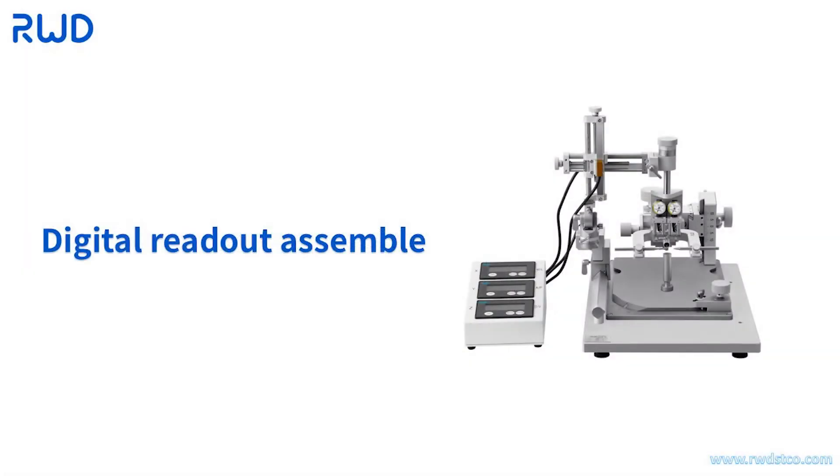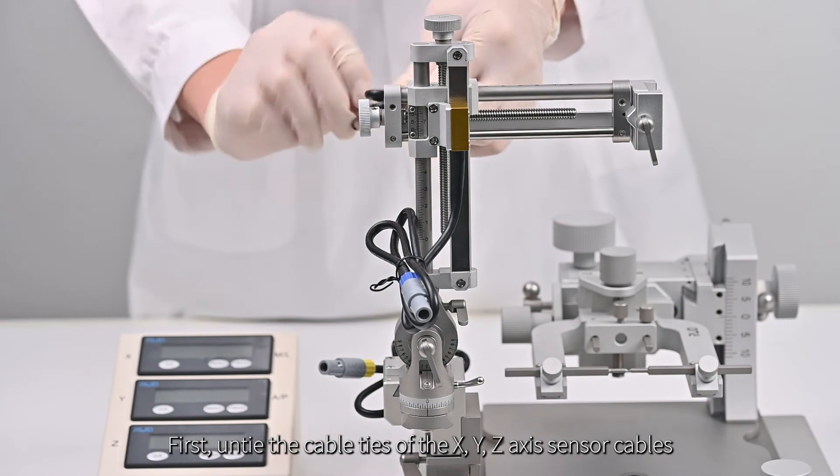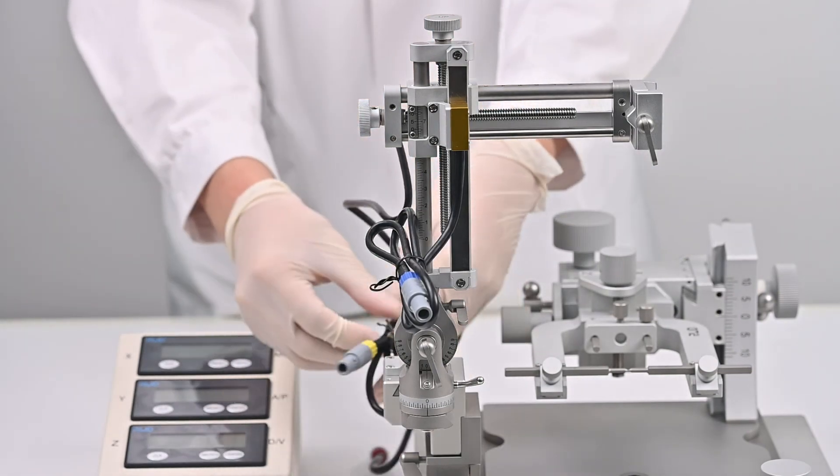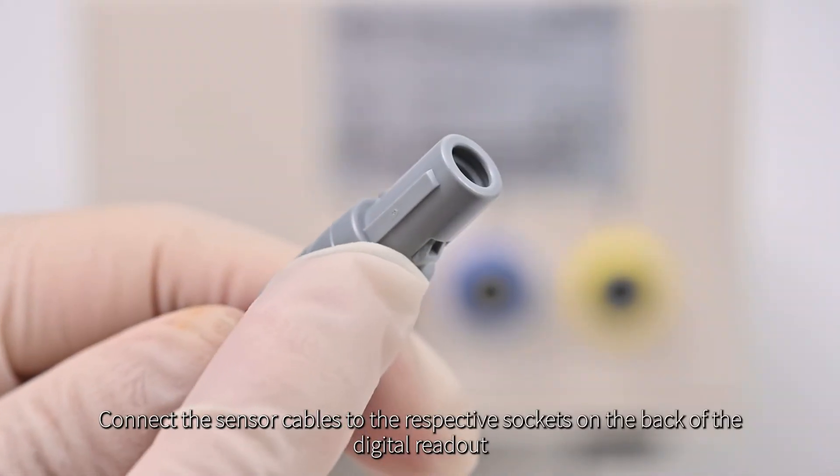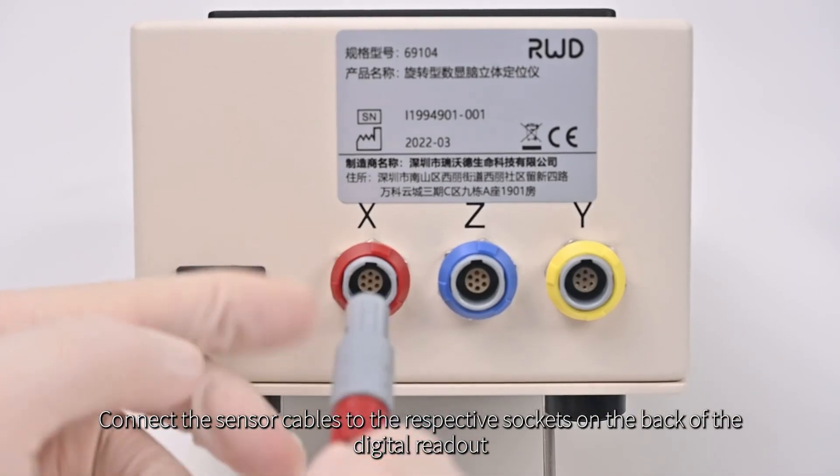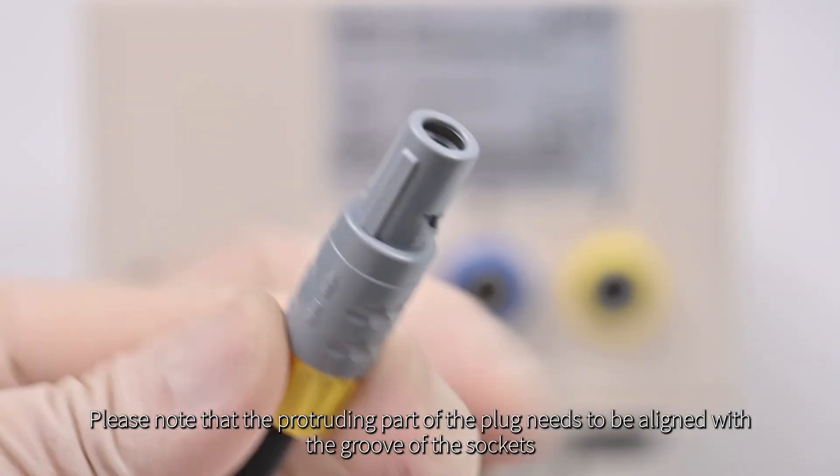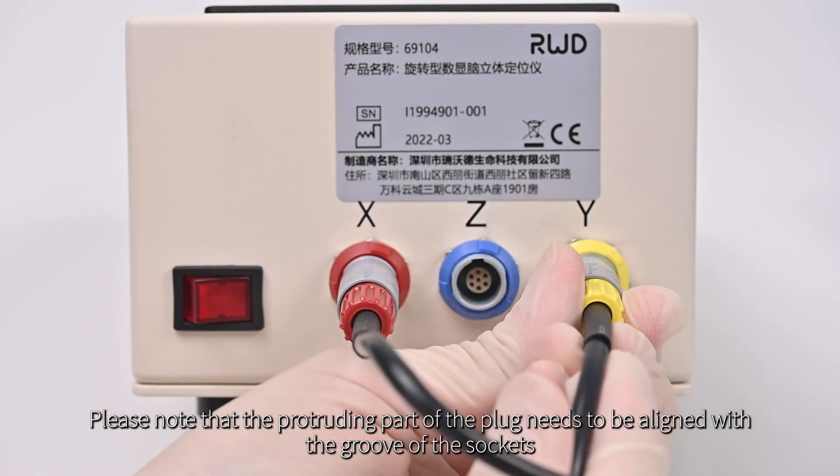Digital readout Assemble. First, untie the cable ties of the X, Y, Z axis sensor cables. Connect the sensor cables to the respective sockets on the back of the digital readout. Please note that the protruding part of the plug needs to be aligned with the groove of the sockets.